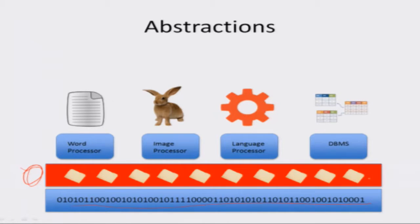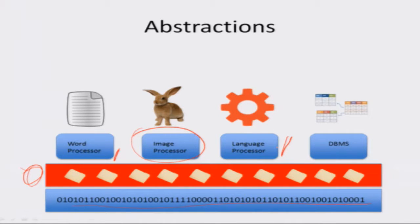When you use the disk explorer you can see various files and directories. Now some of these files may be documents — word documents or spreadsheets — and we need a word processor to manipulate them. Similarly some may be images, like JPEG images, and other software is needed to interpret those. Then we have language processors: the file may be a program, and a language processor will understand it, compile it, and execute it. So this is another piece of software used to manipulate files.